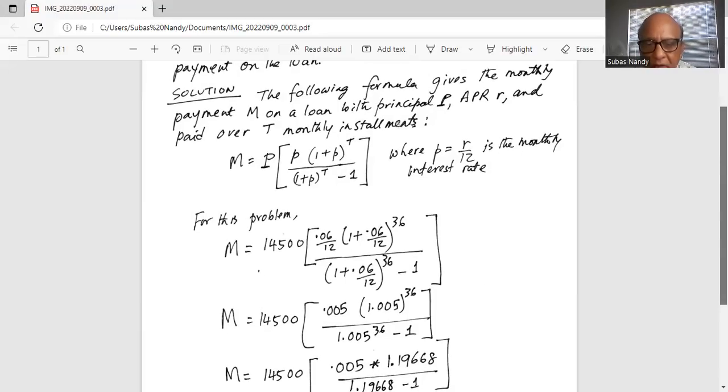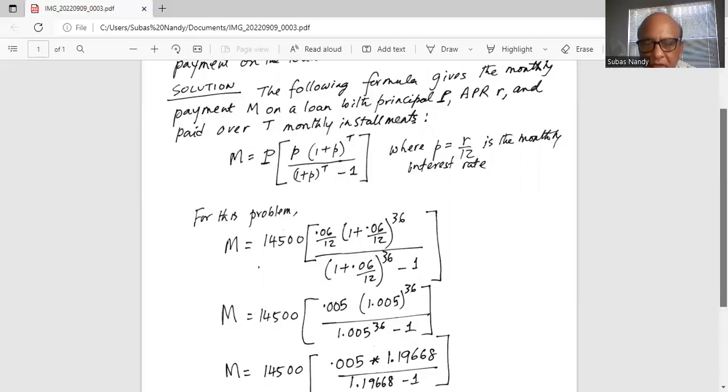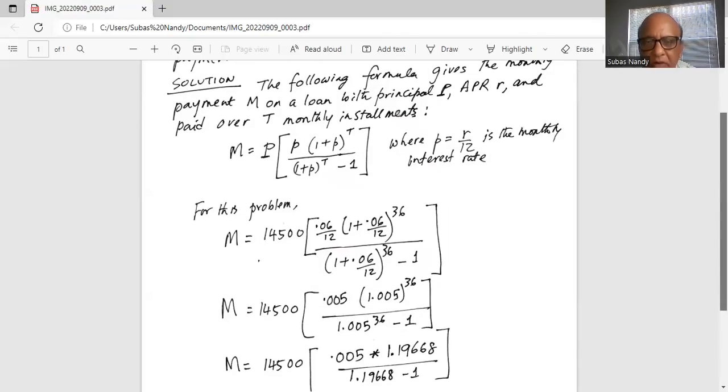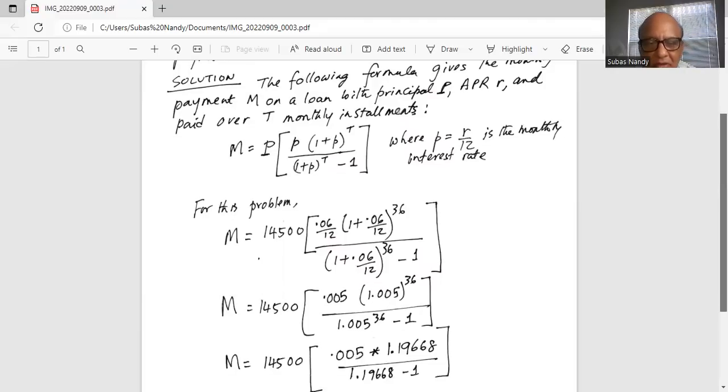Divided by 1 plus 0.06 divided by 12, raised to the power of 36, minus 1, because we have 36 monthly installments.